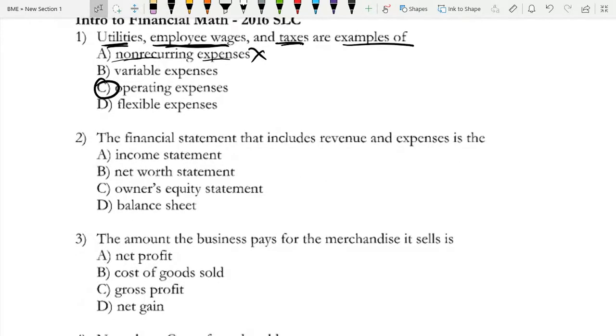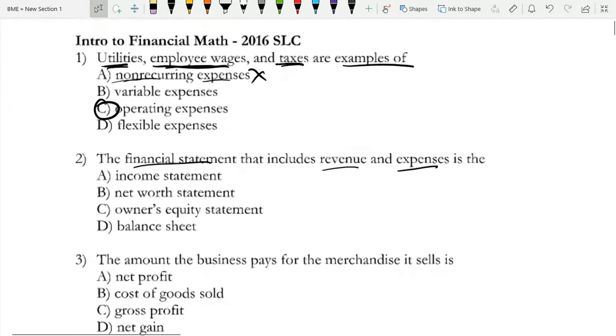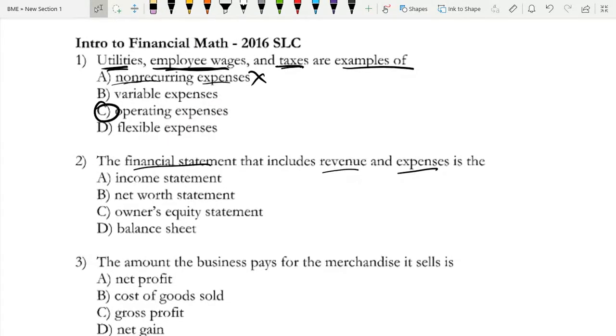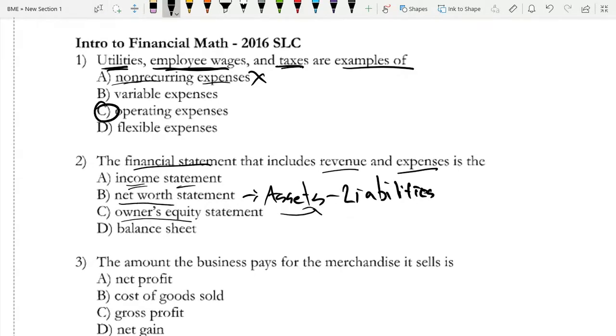Next question: the financial statement that includes revenue and expenses. Let's use process of elimination. Net worth is your assets minus liabilities. Owner's equity statement is basically the same but for a business instead of in total. Between income statement and balance sheet, this is something you just have to know - the answer is income statement.